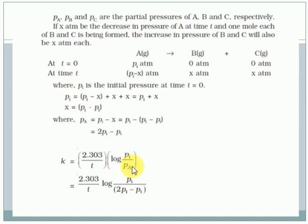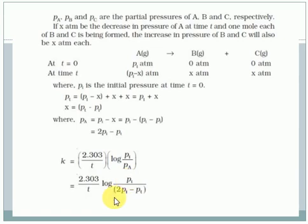Sometimes for gas-phase reactions, instead of concentration you use pressure. So k = 2.303/t × log(P_initial / P_t), where P_initial is the initial pressure and P_t is the pressure at time t. This applies the ideal gas law, and the form of the equation is otherwise the same as the concentration-based one.